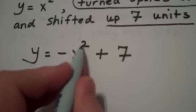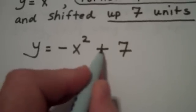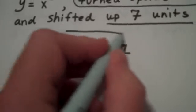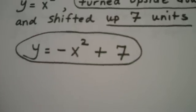So basically what happens, we take a parabola, we turn it upside down, and we shift the entire graph up 7 units. This would be my answer.